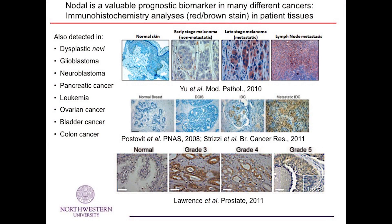We started our discovery journey by working with members of Dr. Powler's pathology department. Using immunohistochemistry analysis, looking for a reddish-brown stain, we looked at a number of different cancers and found that nodal is associated with late-stage melanoma and metastatic disease, with invasive ductal carcinoma in breast cancer as well as metastatic breast cancer, and with increasing Gleason grades in prostate cancer and a number of other cancer types. So nodal appears to be a valuable prognostic biomarker in many different cancers and an important new molecular target.